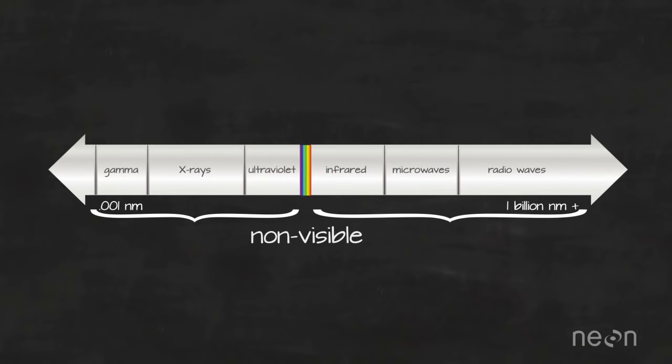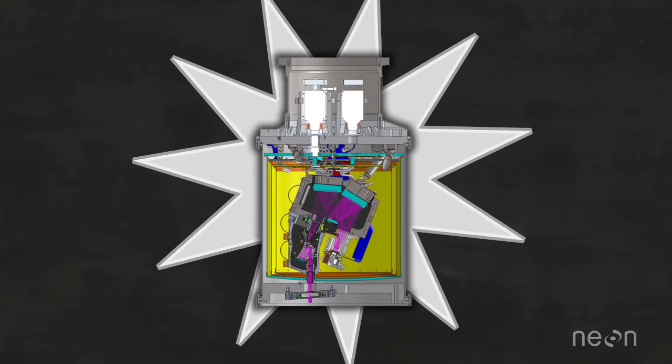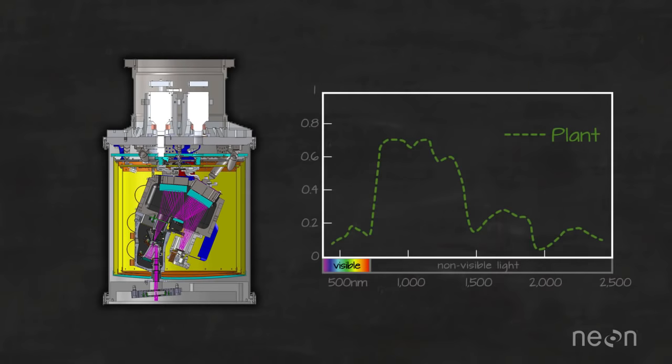To measure these differences in the non-visible portion of the spectrum, we use imaging spectrometers, which record light in both the visible and non-visible parts of the spectrum.